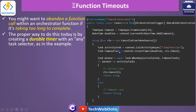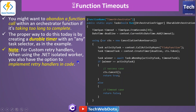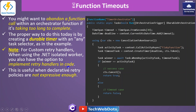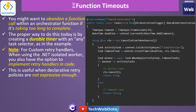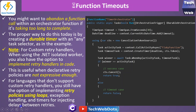There are some additional notes. For custom retry, if the built-in retry handler is not working for you — for example when using the .NET isolated worker — you have the option to implement a retry handler in code. This is useful when declarative retry policies are not expressive enough. For languages that do not support custom retry handlers, you can still implement a retry policy using loops, execution handlers, and timers for injecting delays between retries.